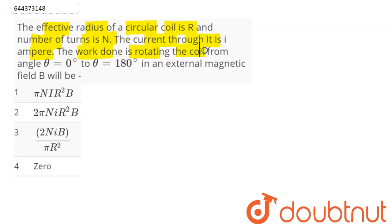Work done in rotating the coil from angle theta equal to 0 degree to theta equal to 180 degree in an external magnetic field B will be. So we can say here the work done is equal to change in potential energy.